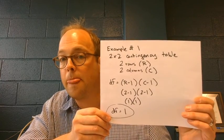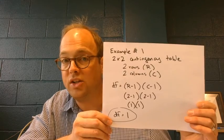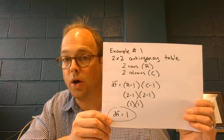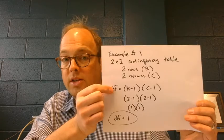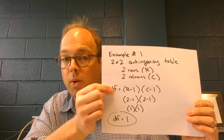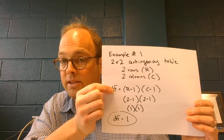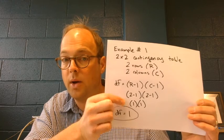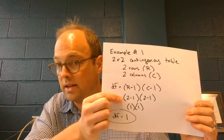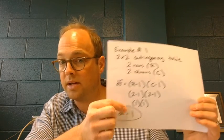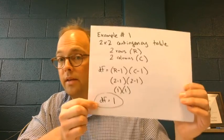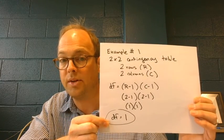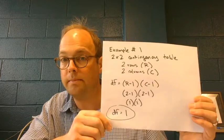Example number one involved a two by two contingency table — two rows, two columns. Degrees of freedom equal R minus one times C minus one: two minus one times two minus one. Two minus one is one, two minus one is one, one times one is one. So for a two by two contingency table, the degrees of freedom would be one.